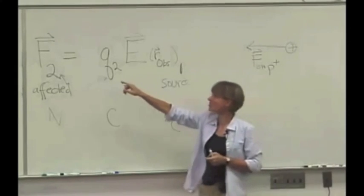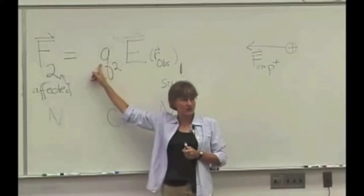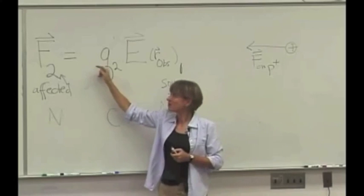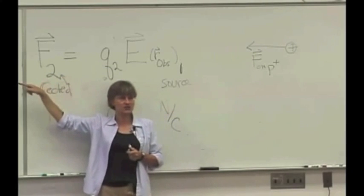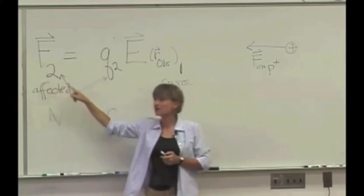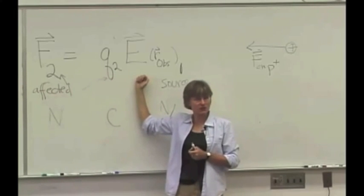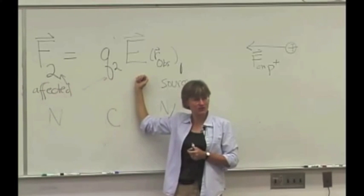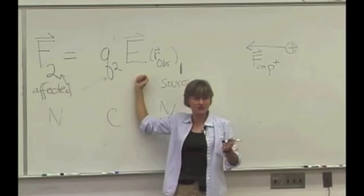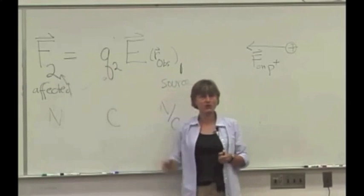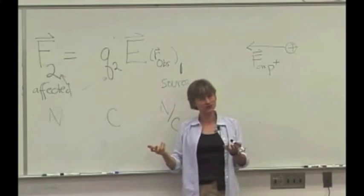We put a proton. Look at this vector equation. The charge of a proton is positive. We had a force in the minus x direction. Does the vector equation alone tell you the direction of the electric field? Yeah, it does, doesn't it? Because if two vectors are equal, their directions have to be equal, don't they?